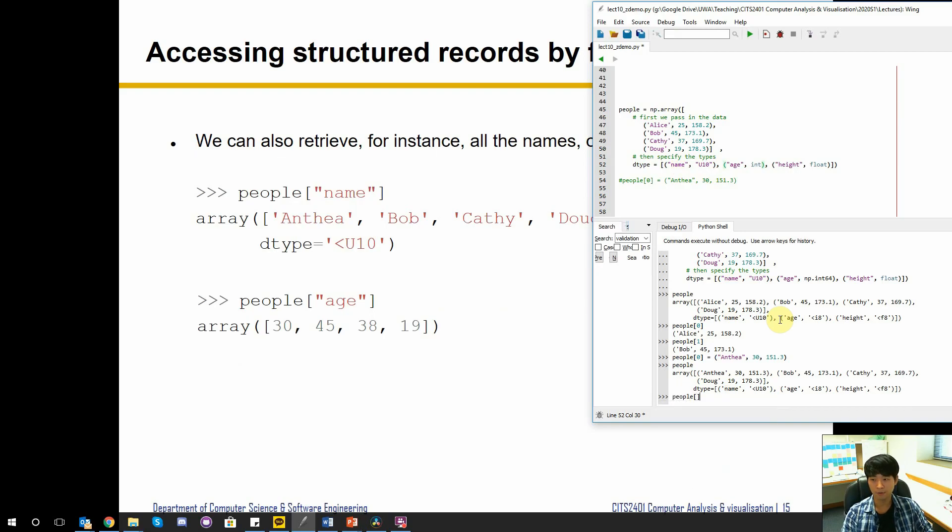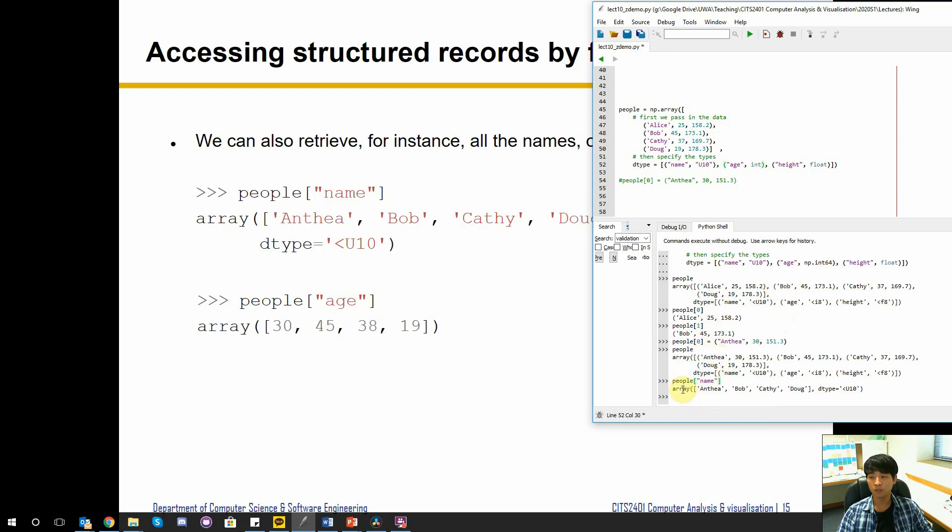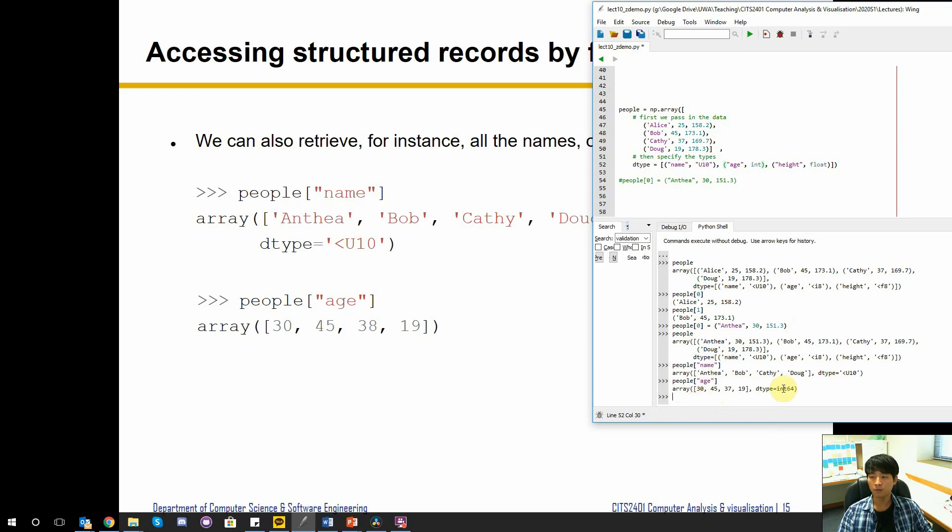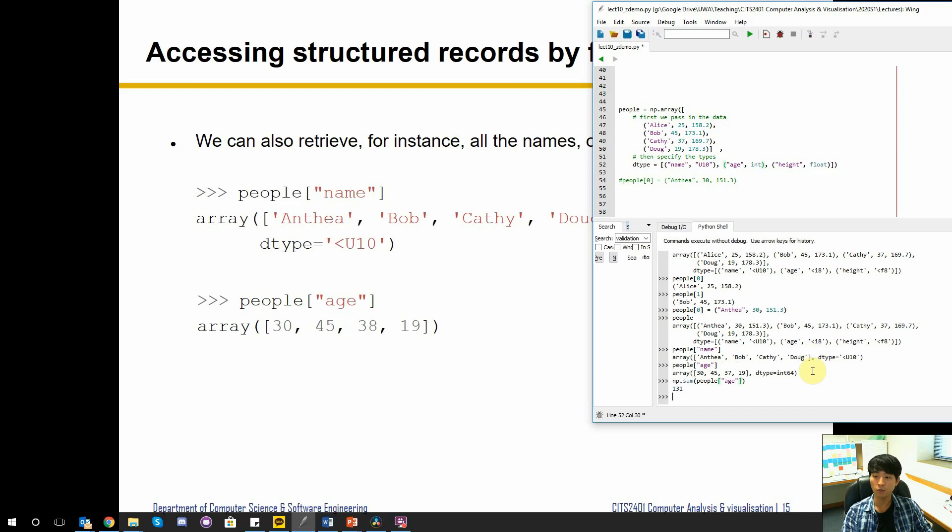If we do that, what it's going to do is return an array containing only the name fields from each record. You can do the same with age and height as well. Of course it's going to tell us exactly what the dtype is using these records. You can see that by accessing the records using its name, we can easily retrieve the NumPy arrays that contain specific numbers.